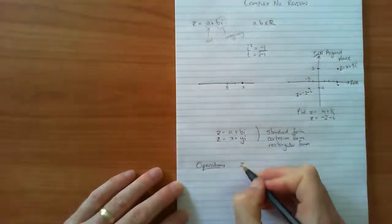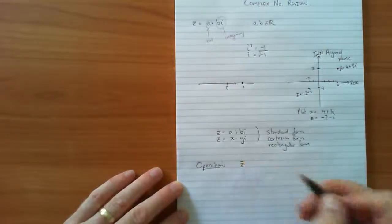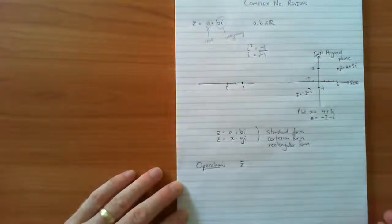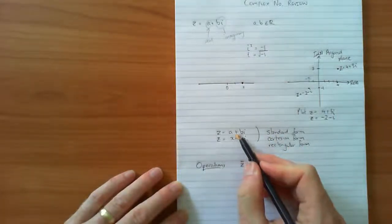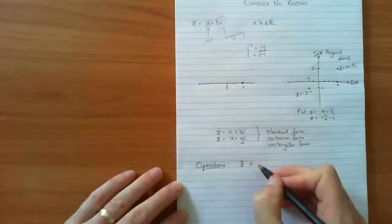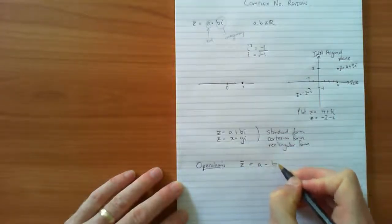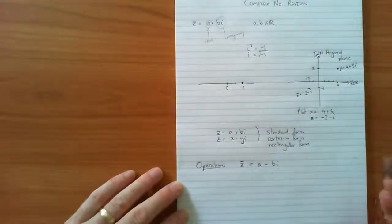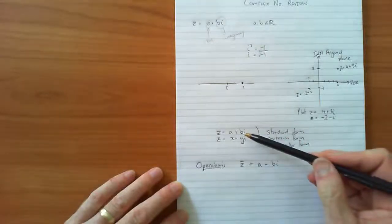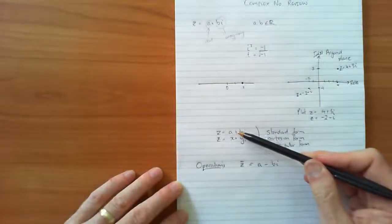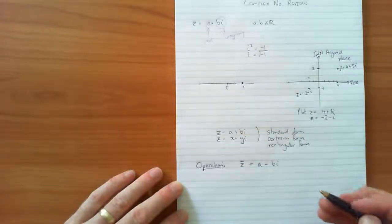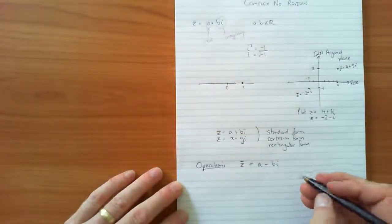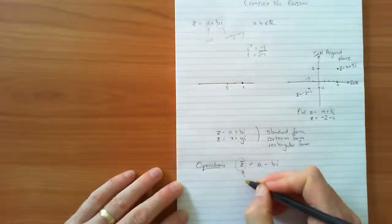First of all the conjugate, and you should remember the symbol Z with a bar on top. That means conjugate. The conjugate of Z, if Z equals a plus bi, the conjugate of Z would be a minus bi. So the conjugate is simply the opposite sign for the imaginary part. This here we call the conjugate.